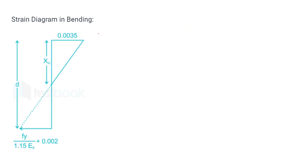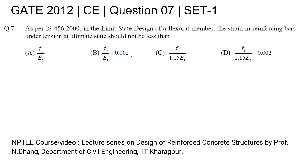Looking at the strain diagram of bending, this is the compression side and this is the tension side. These values are the strains in the outermost layer — this one for tension and this one for compression. So our answer will be option D: 0.002 plus fy upon 1.15 times Young's modulus.